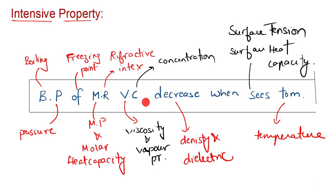B for boiling point, P for pressure, F for freezing point, M for melting point and heat capacity, R for refractive index, V for viscosity and vapor pressure, C for concentration, D for density and dielectric, S for surface tension and surface heat capacity, TOM for temperature.